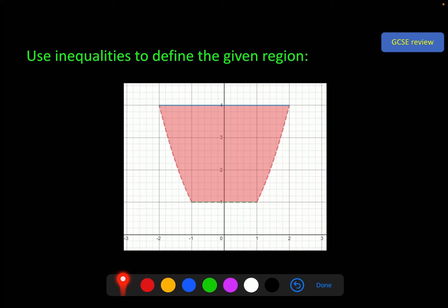Start a question on the screen to review a GCSE topic about inequalities. We can use inequalities to define the given region. In order to do this, we need to know what the lines are. At the top here, this is y equals 4. At the bottom, y equals 1. And in red, this curve is y equals x squared.